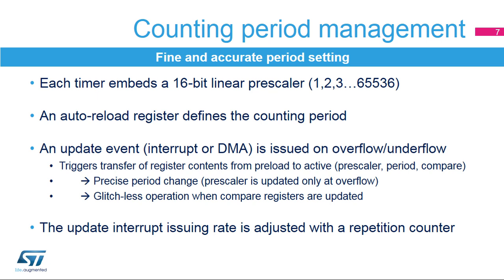An 8-bit programmable repetition counter allows you to decouple the interrupt issuing rate from the counting period, and have, for instance, 1 interrupt every single, 2nd, 3rd, and up to 256th PWM period. This is particularly useful when dealing with high PWM frequencies.